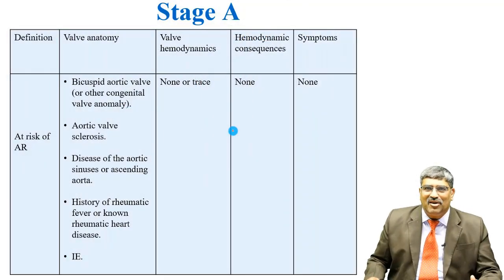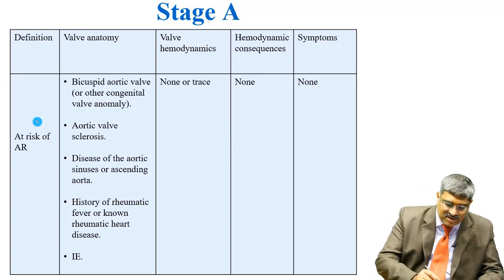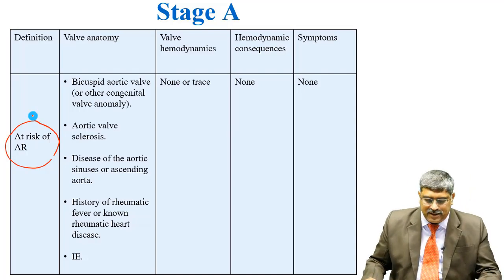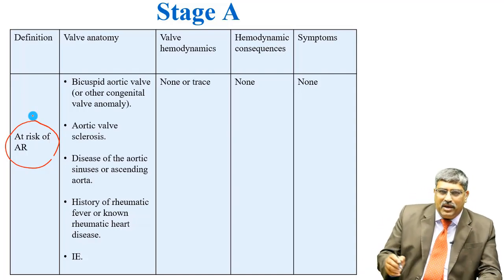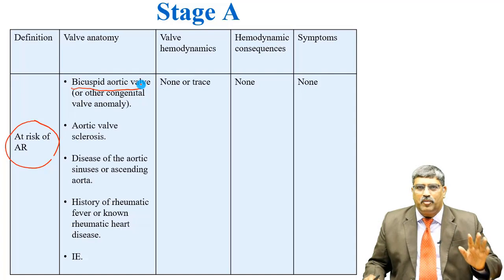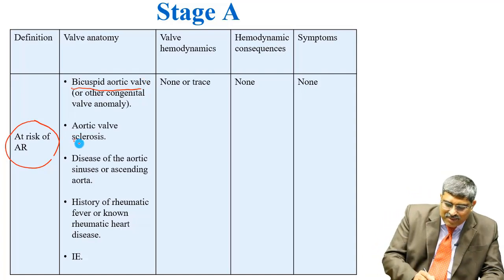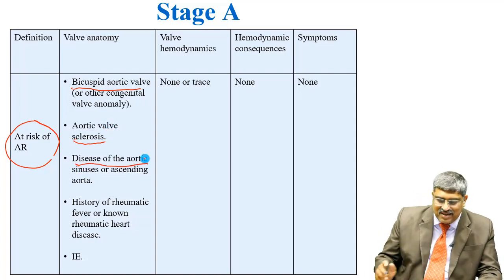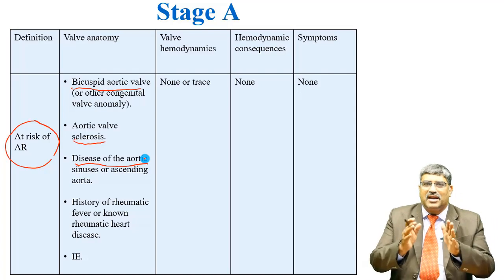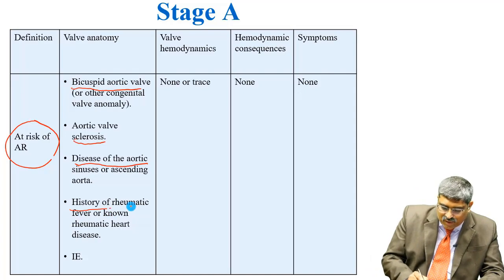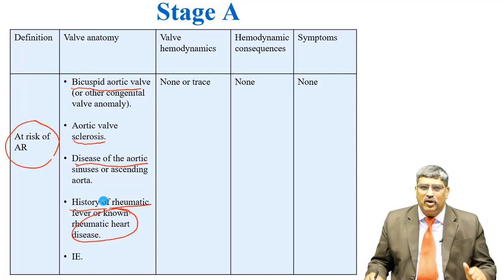Coming to the staging of aortic regurgitation: Stage A is the patient at risk of aortic regurgitation. Looking at valve anatomy, it can be a bicuspid aortic valve or some other congenital anomaly, or a sclerosed aortic valve, disease of the aortic sinuses or ascending aorta. Sometimes sinus of Valsalva aneurysm can also cause AR. History of rheumatic fever, known rheumatic disease, and infective endocarditis also fall here.